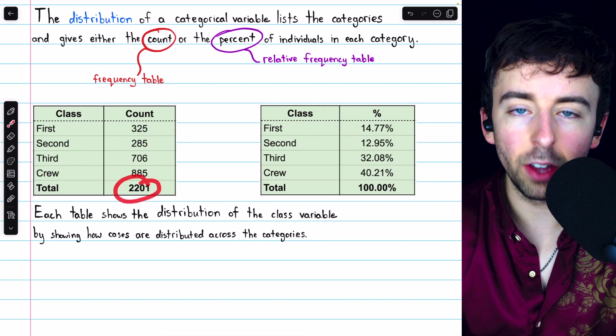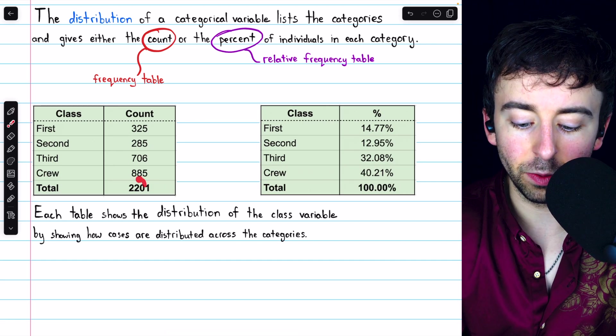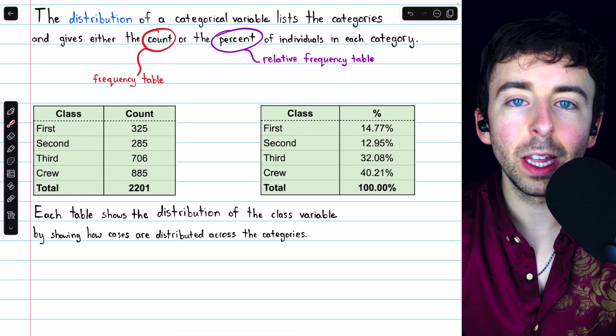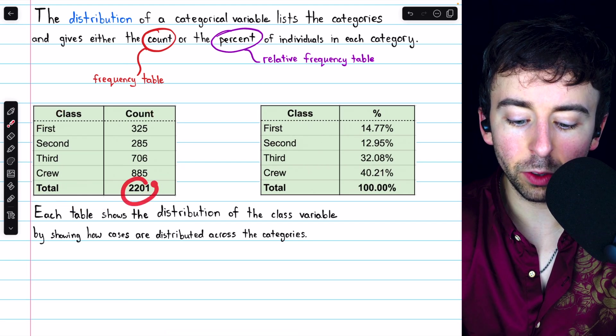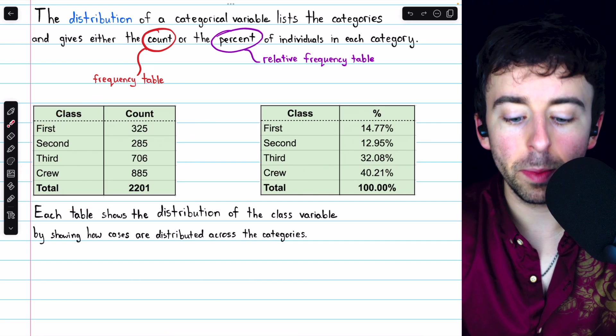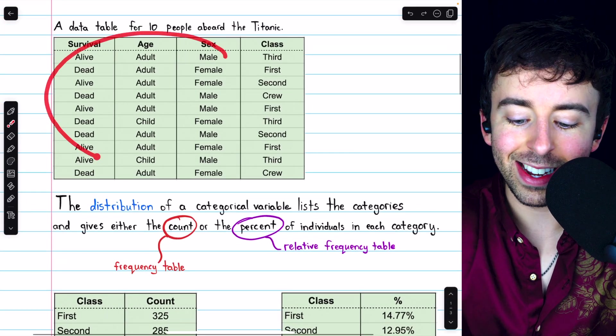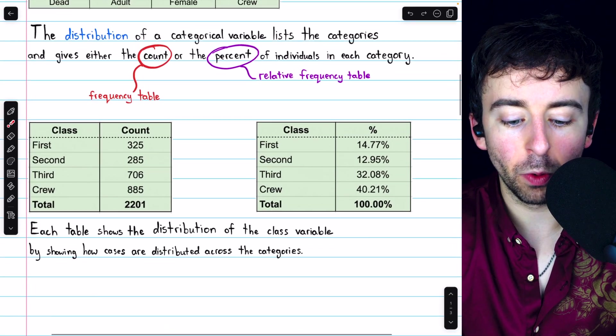Oftentimes, the total is also included. This can be a good check if we know that our data consists of 2,201 people. Then when we make a frequency table, we should have a total of 2,201. This definitely gives us a better idea of how the class variable is distributed than a raw data table. However, there is still some room for improvement.